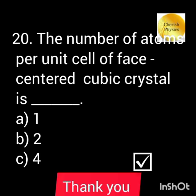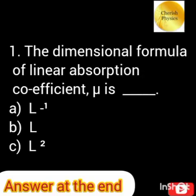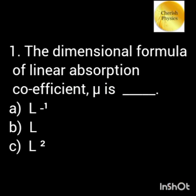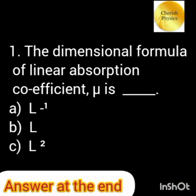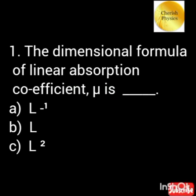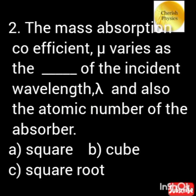The dimensional formula of linear absorption coefficient mu is M⁻¹. The mass absorption coefficient mu varies as the cube of the incident wavelength lambda and also as the cube of the atomic number of the absorber.